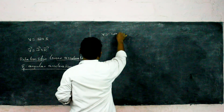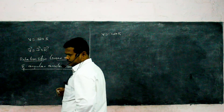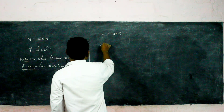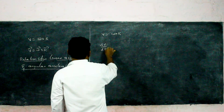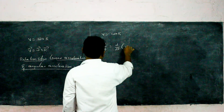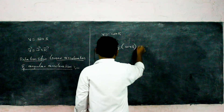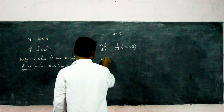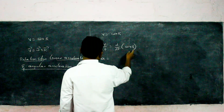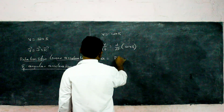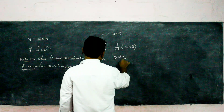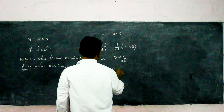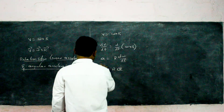Starting from V = ωR, differentiating with respect to time gives dV/dt = d/dt(ωR). Since dV/dt is acceleration and R is constant, we get a = R·(dω/dt), so a = Rα.